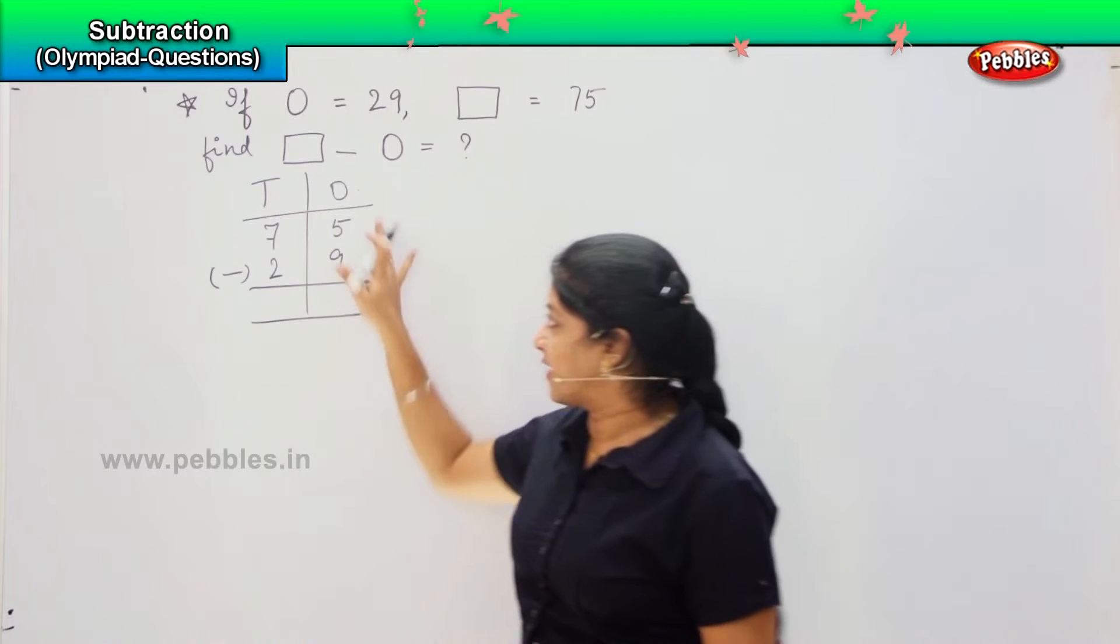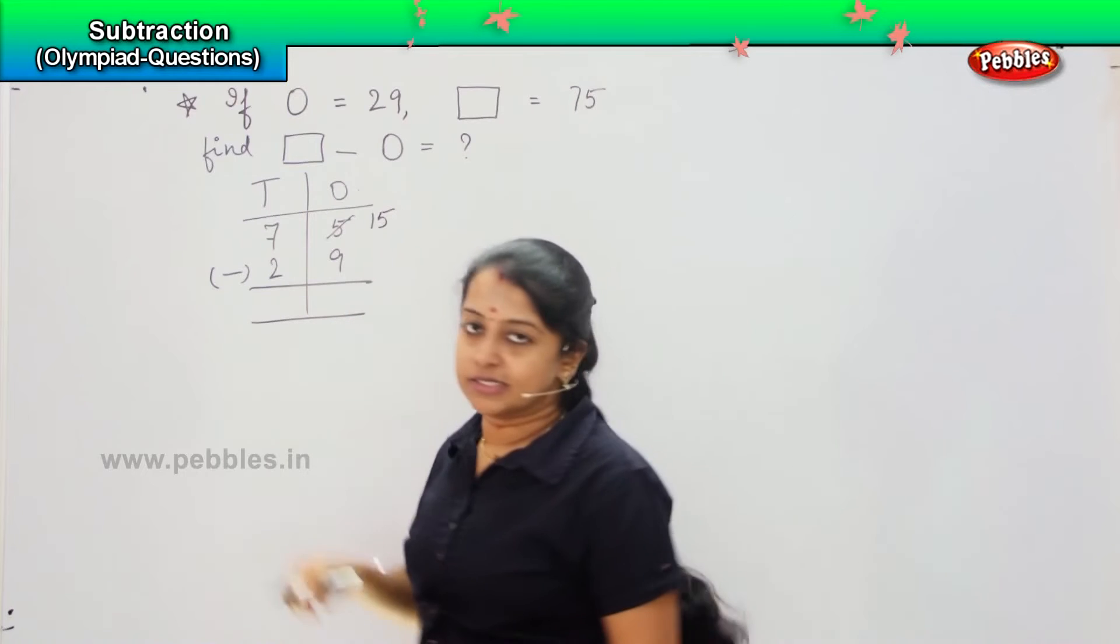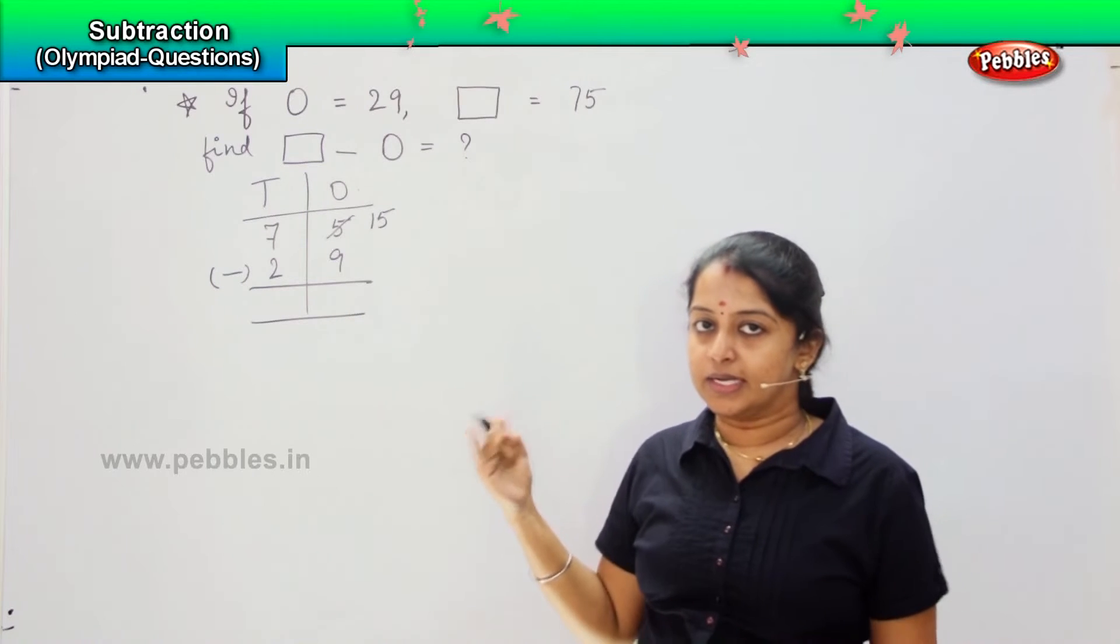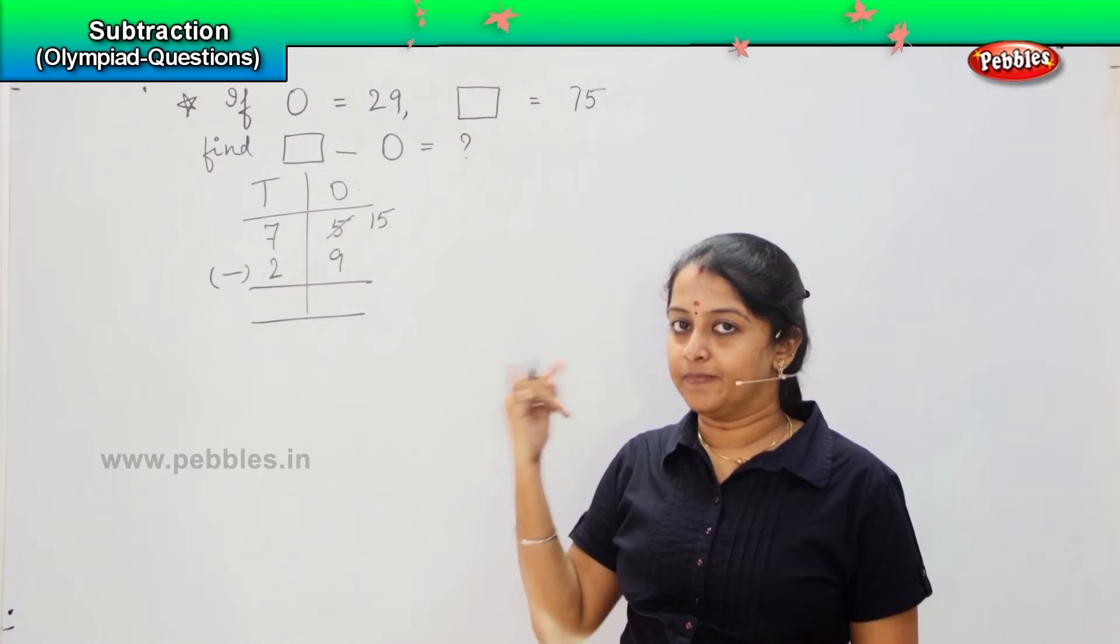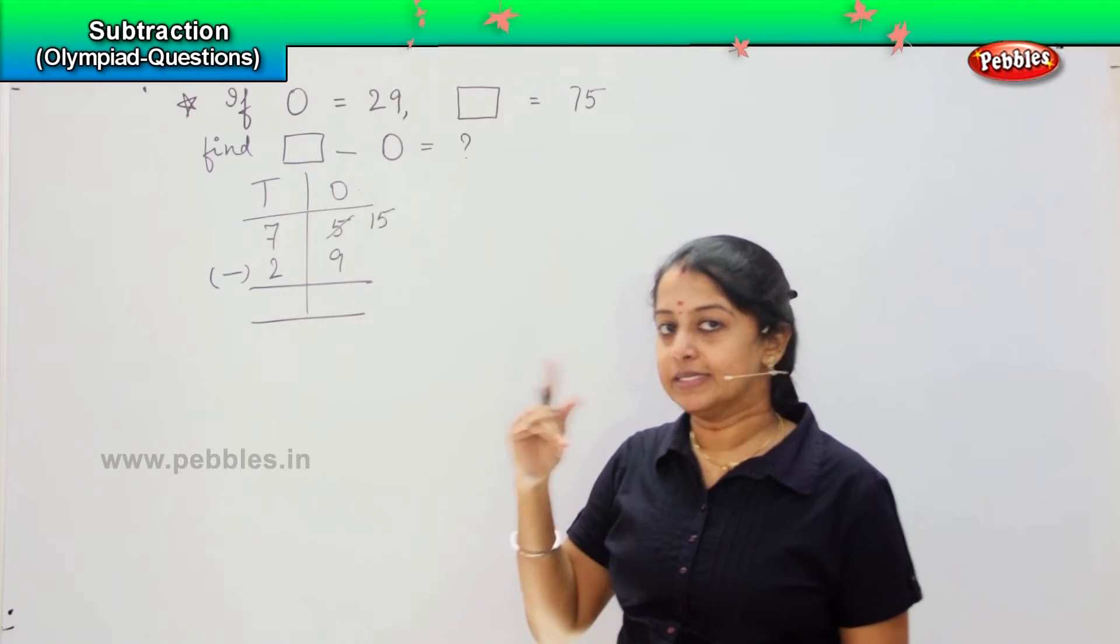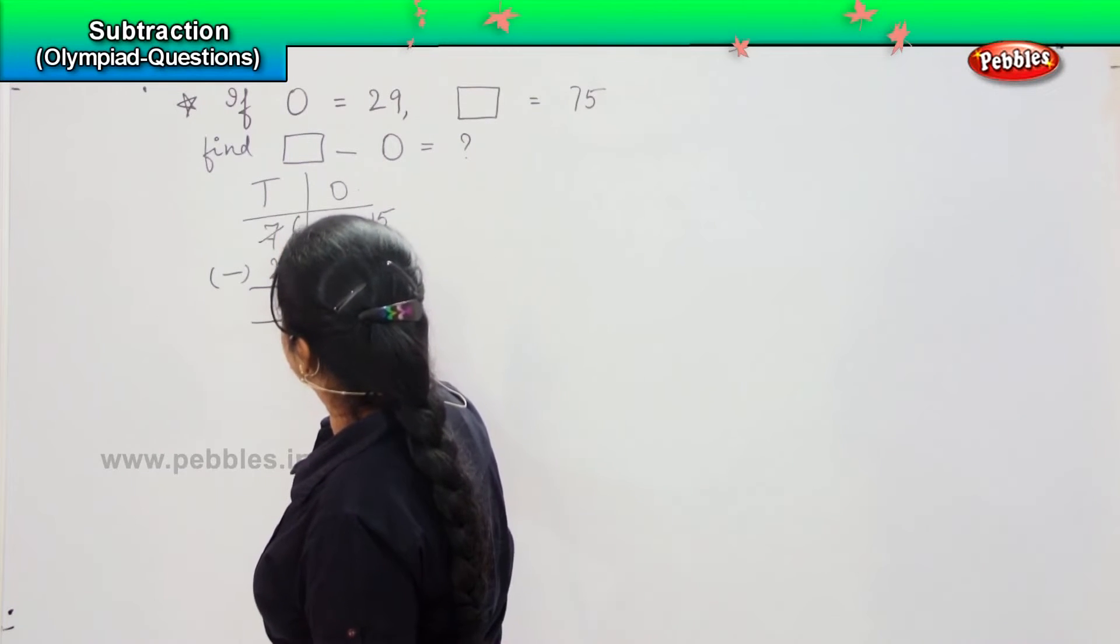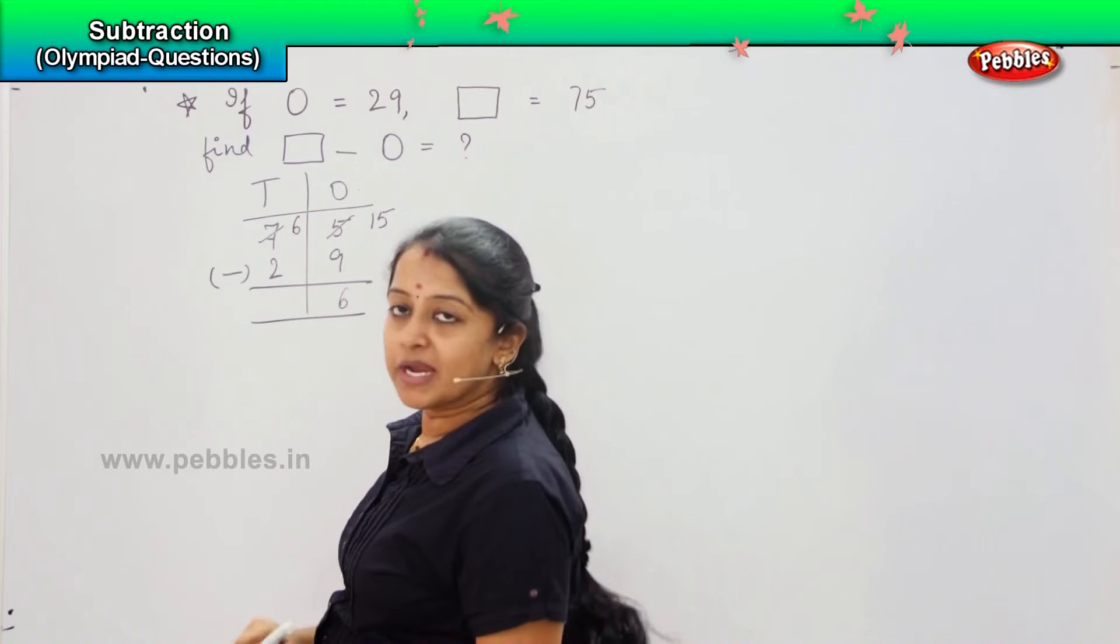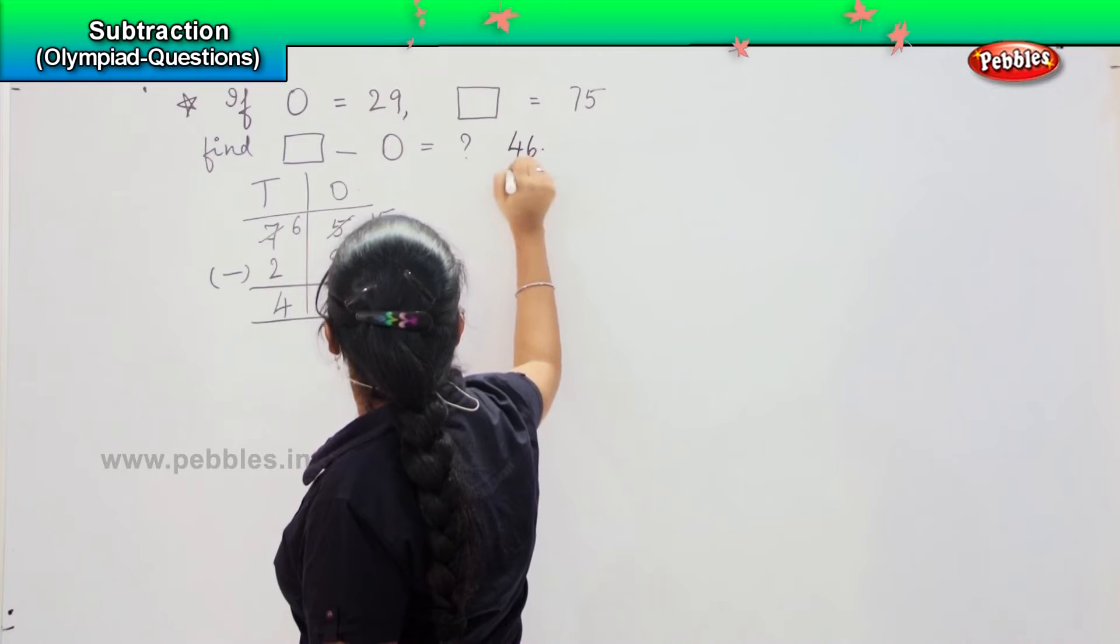So how will you solve? First is 75 minus and the circle is 29. Since 5 is lesser than 9, we need to borrow. So 15 minus 9 is 6, and since we have given here 1, this will be reduced by a number. So 6 minus 2 is 4. So my answer is 46.